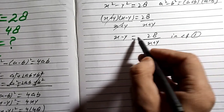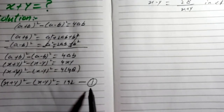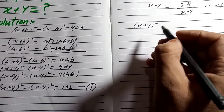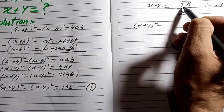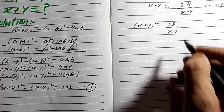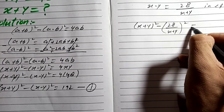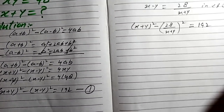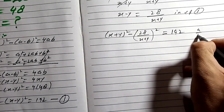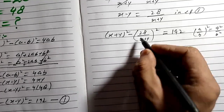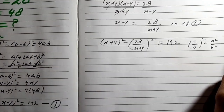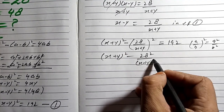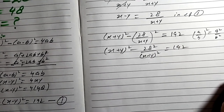Now we substitute the value of x minus y into equation 1. Equation 1 becomes: (x+y)² minus (28 divided by (x+y))² equals 192. Applying the power rule, (28/(x+y))² equals 28² divided by (x+y)², so we get (x+y)² minus 784/(x+y)² equals 192.